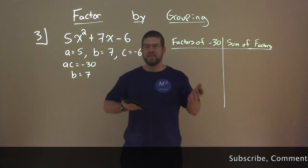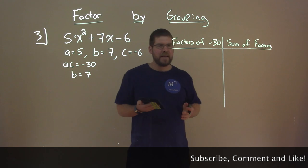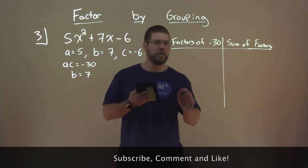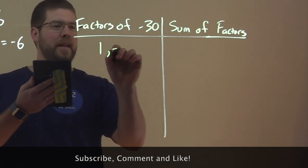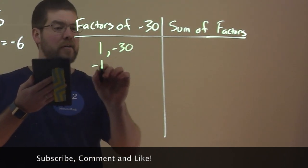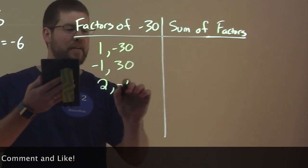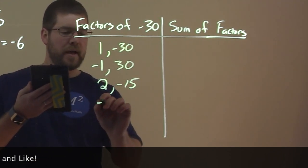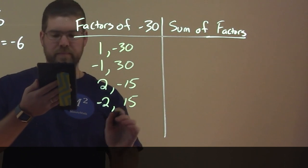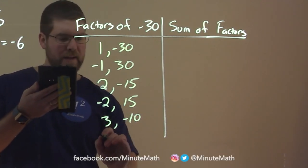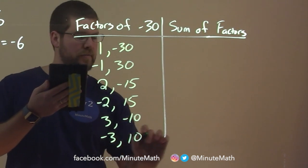So, what two numbers multiply to be negative 30? We have 1 and negative 30, negative 1 and positive 30, 2 and negative 15, negative 2 and positive 15, 3 and negative 10, and negative 3 and positive 10.